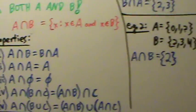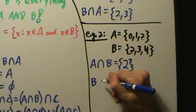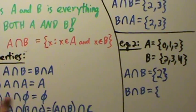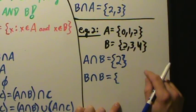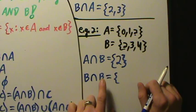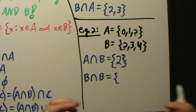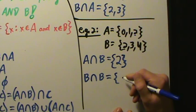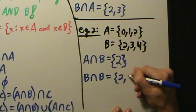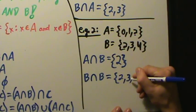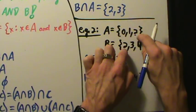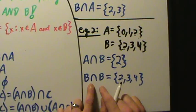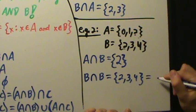Let's illustrate properties 2 and 3. What if we did B intersected with B? From the definition, that's all X such that X is in B and X is in B. B is {2, 3, 4}. What does B have in common with itself? Everything — 2, 3, and 4. So B intersect B = {2, 3, 4}, which is just B. That verifies property 2 with this specific set B — intersecting any set with itself just gives you that set back.